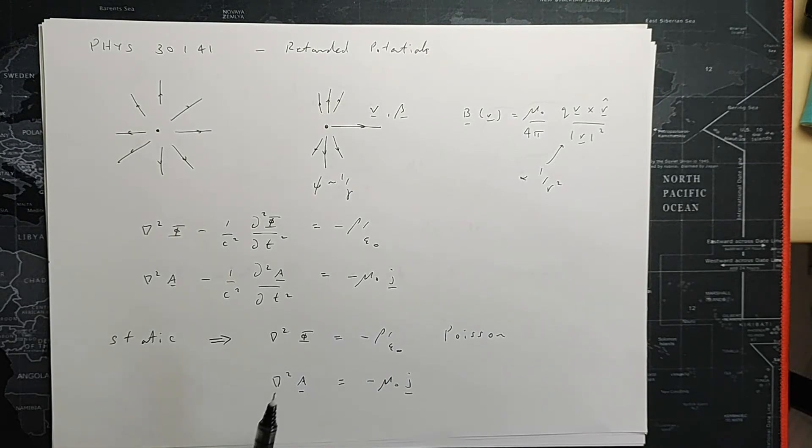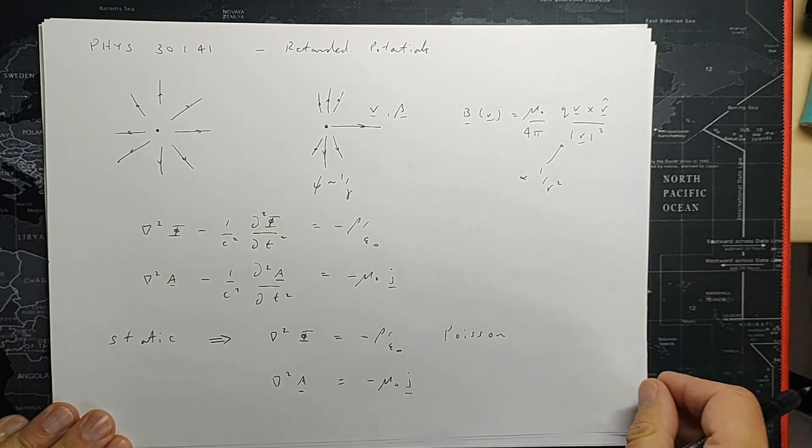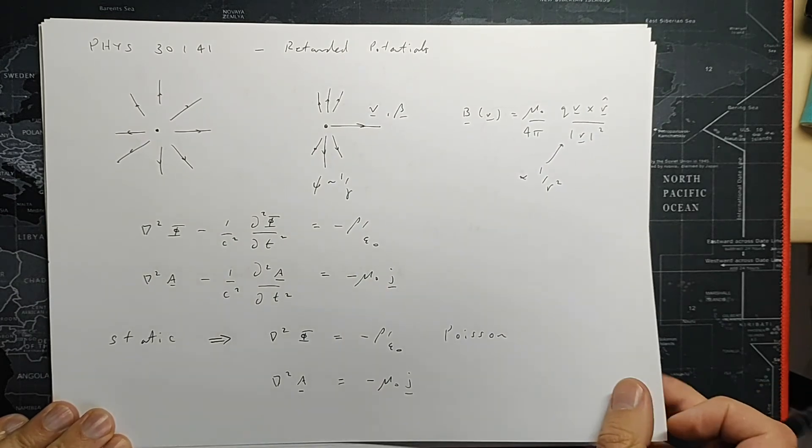And in the static case, we could show that if there is no time variation, that the potentials depend upon the positions of the charges. So this is the scalar potential and the vector potential depends upon the disposition of the currents. In other words, what the currents are doing in any given direction and at any given location. So this is our static potential case. But we do need to look at what happens if the charges and currents are changing as a function of time. And we will relate that to our discussion of an accelerated charge in due course.